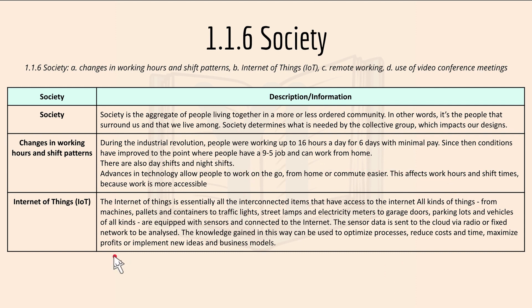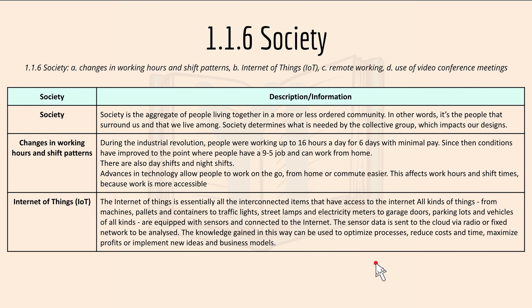The Internet of Things, or IoT, is essentially all interconnected items that have access to the internet — from machines and street lamps to electricity meters and garage doors — all equipped with sensors connected to the internet. Sensor data is sent to the cloud via radio or fixed network to be analyzed. This knowledge can be used to optimize processes, reduce cost and time, maximize profits, or implement new ideas and business models.